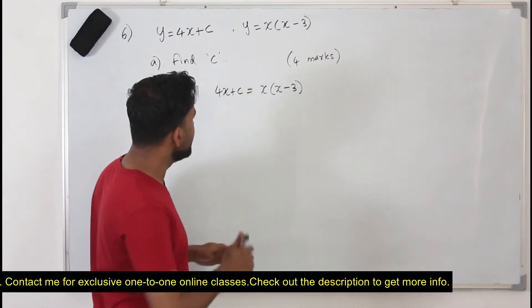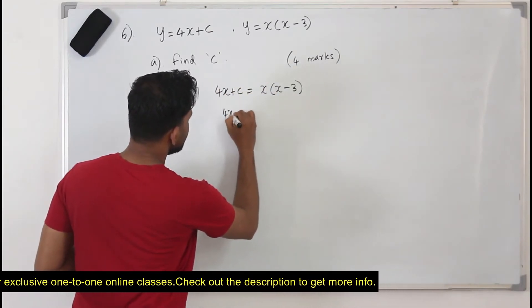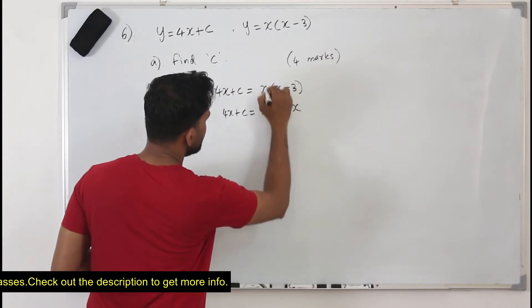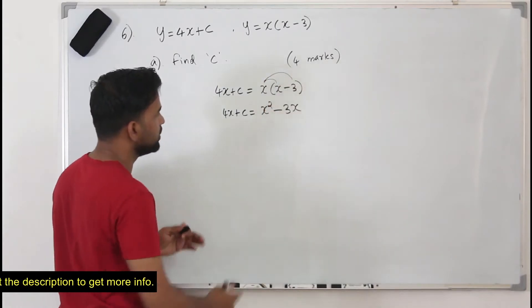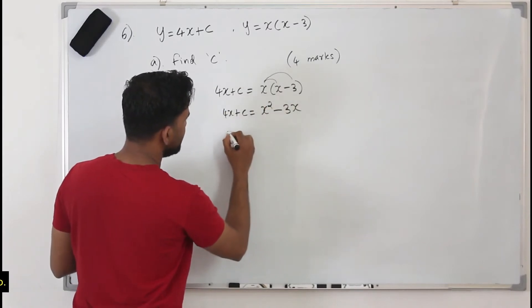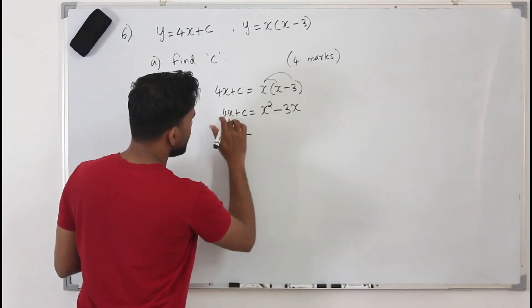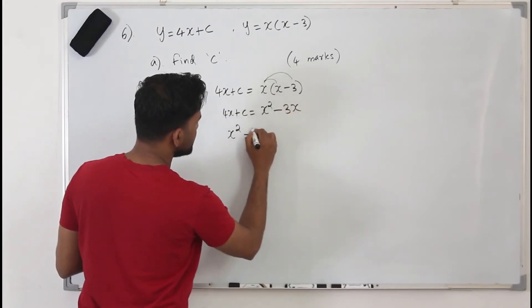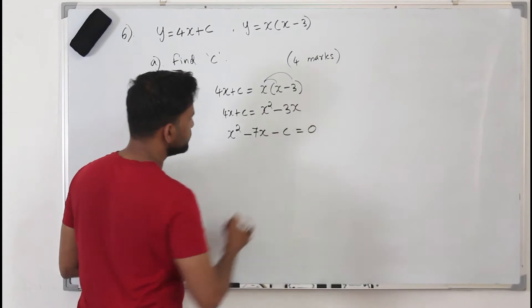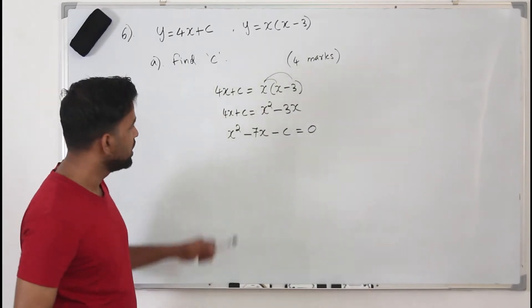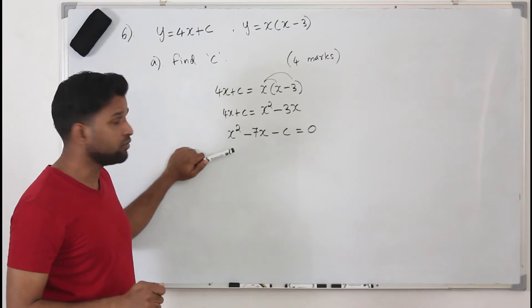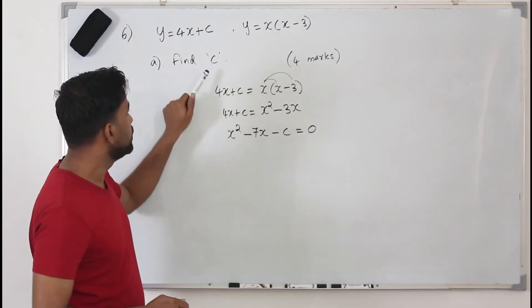When we rearrange, we get 4x plus c equals x squared minus 3x, after multiplying x by both terms. Bringing terms to the other side gives x squared minus 3x minus 4x, which is minus 7x, minus c, equals 0. So that's a quadratic equation, and we are going to use the discriminant of this quadratic equation to find c.